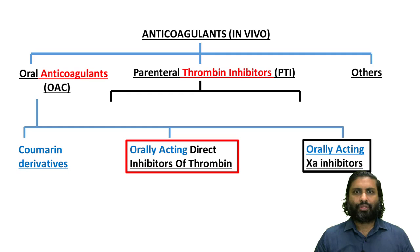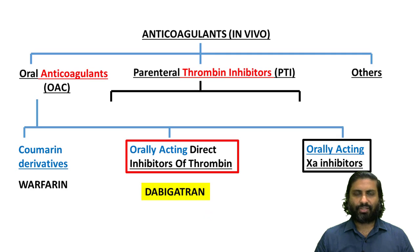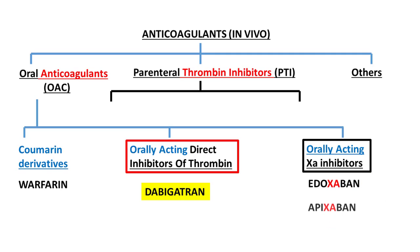The coumarin derivatives or vitamin K antagonists have warfarin as the most important example. The orally acting direct inhibitors of thrombin include dabigatran, while orally acting direct factor 10A inhibitors include edoxaban, apixaban, and rivaroxaban.